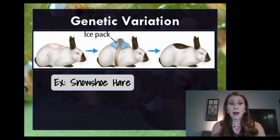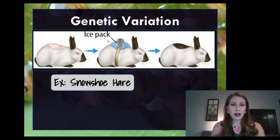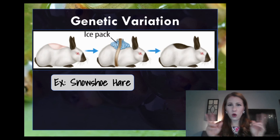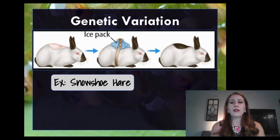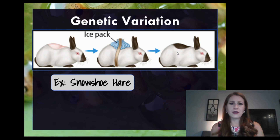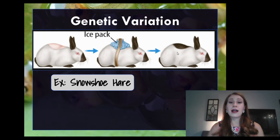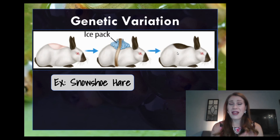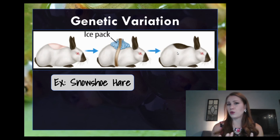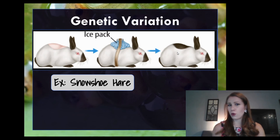Before, this bunny rabbit had white fur on its back. Then when it got the ice pack — that cold weather simulation — that fur grew back brown. It's not because it just decided it's going to be cold, let's have some brown fur. It's because there is a gene for brown fur in the snowshoe hare that got turned on when those cells sensed the cold temperature. So that gene was turned on because of the cold.